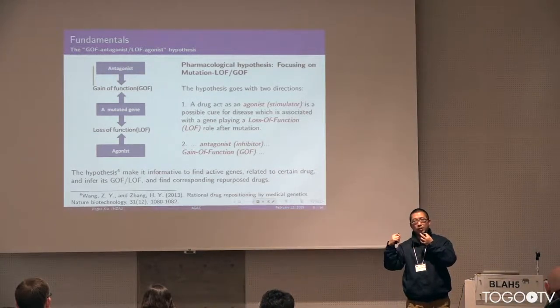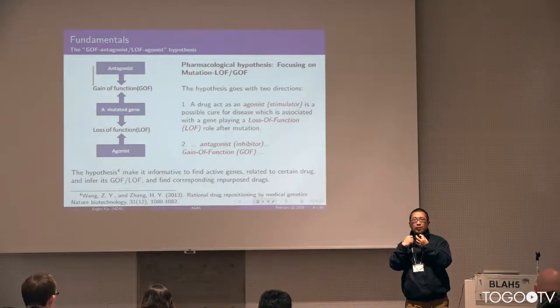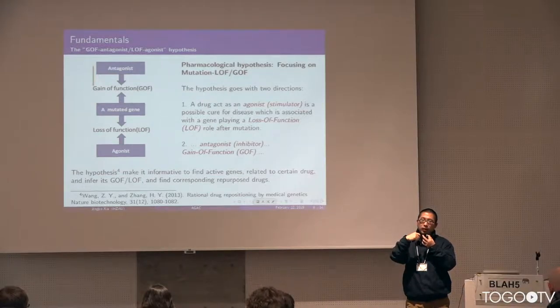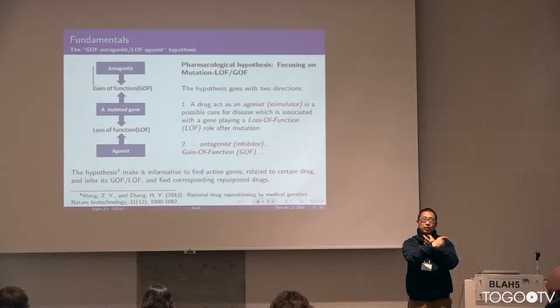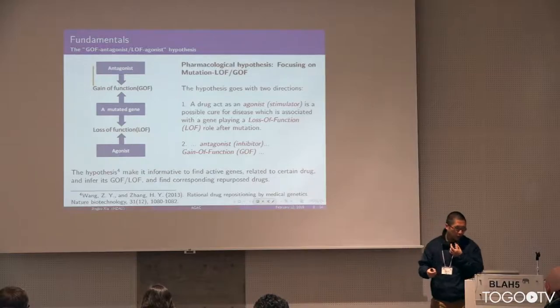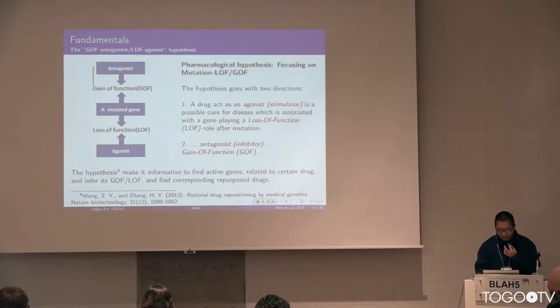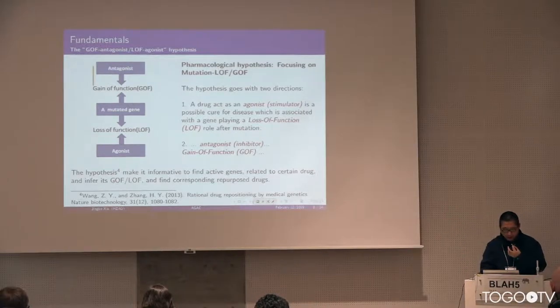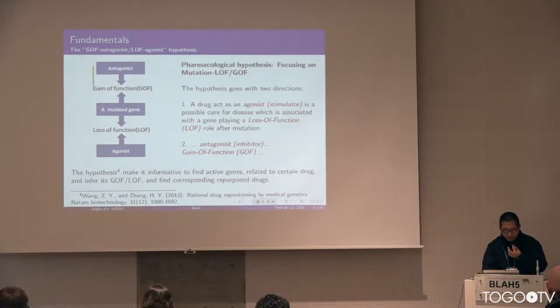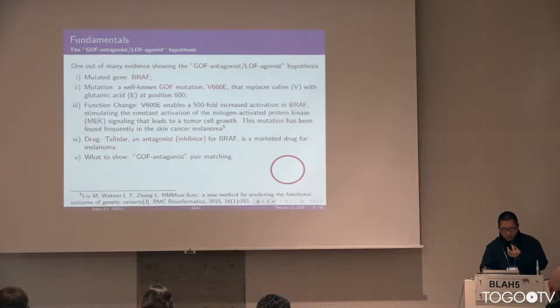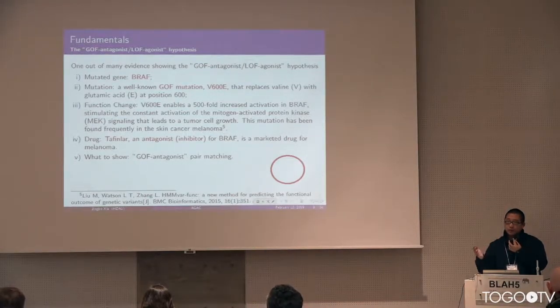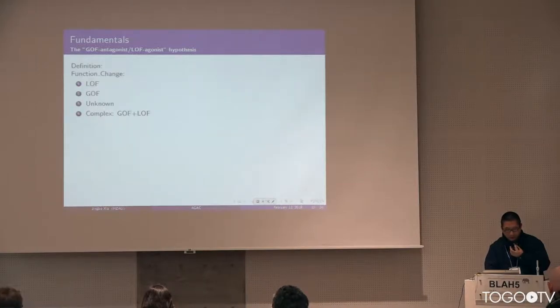They will possibly form a drug and gene pair also linked to the disease. So by doing that, we can do the so-called drug repurposing. There's another kind, it's called GOF and inhibitor. The corpus of AGAC is to try to trace this knowledge.